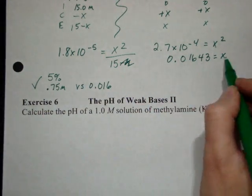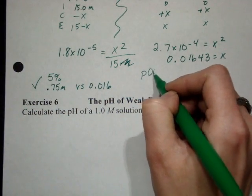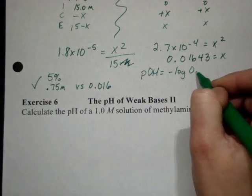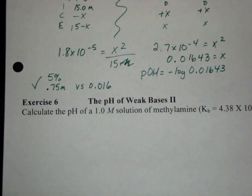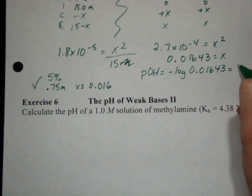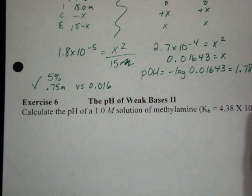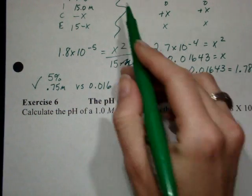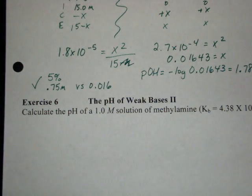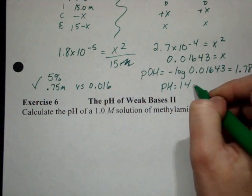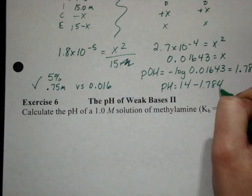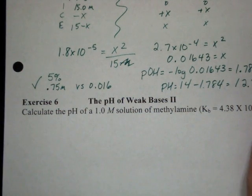Now what I can find with this is I can find the pOH. pOH is negative log of 0.01643, and that gives me 1.784. I'm going to go ahead and carry three sig figs because I've got three here at the top. And then for my pH would be 14 minus that. So my pH is 12.216.